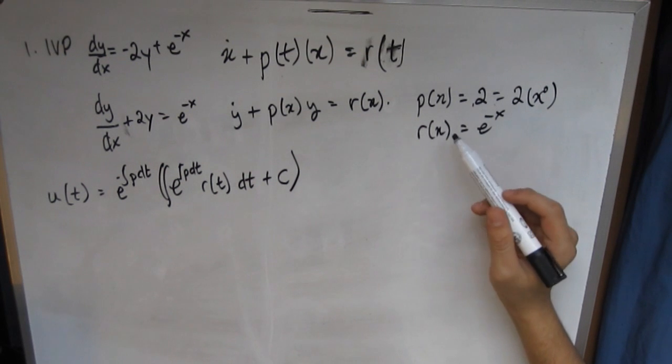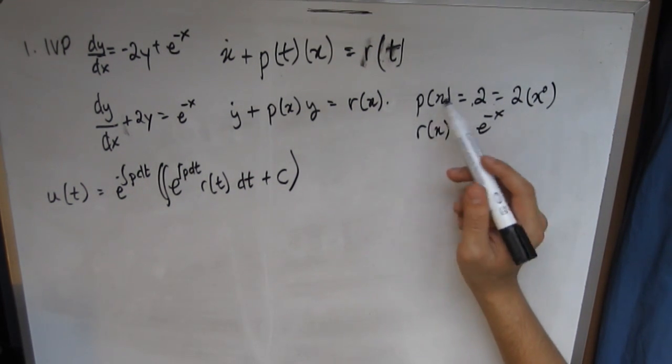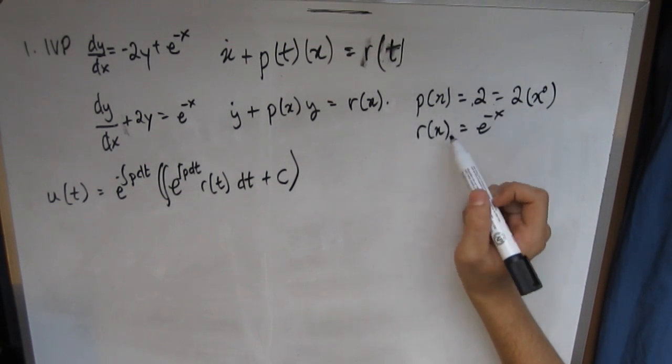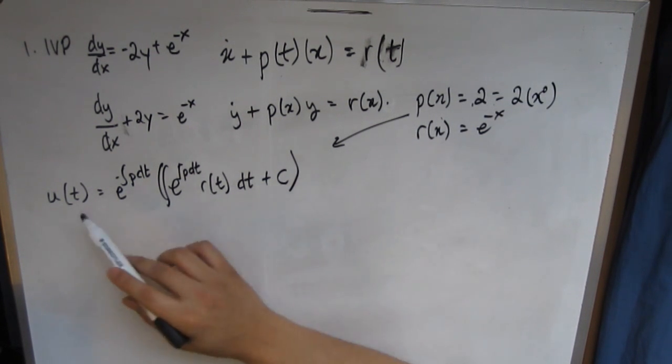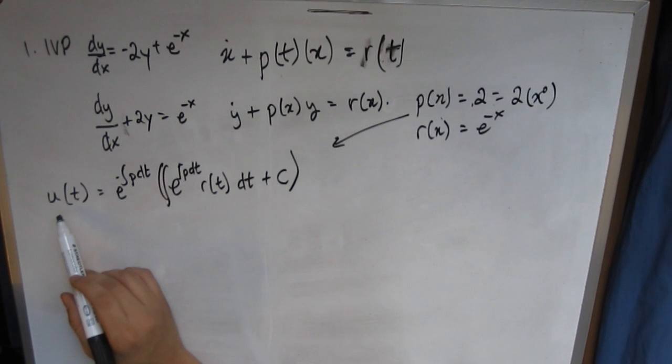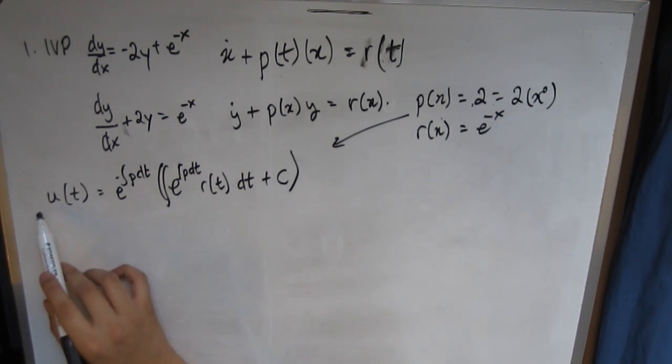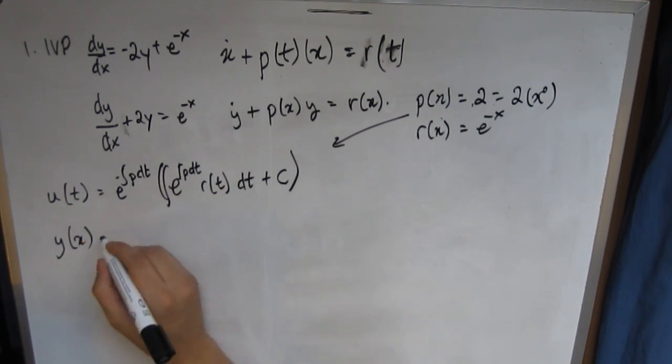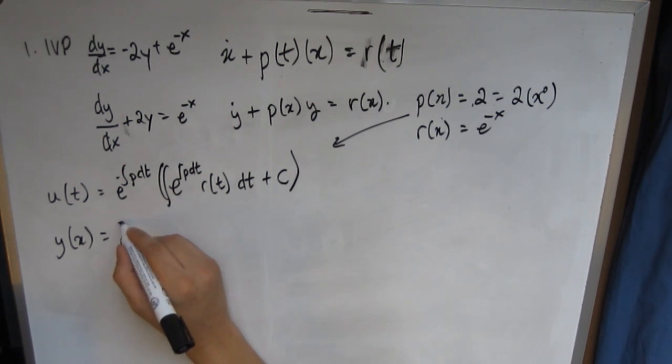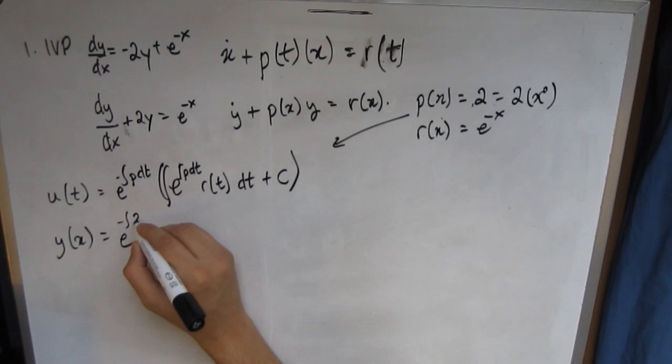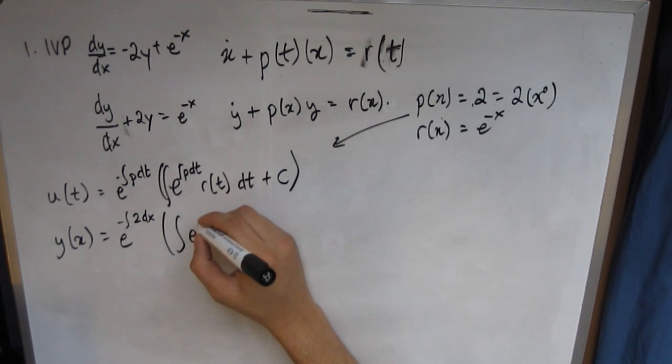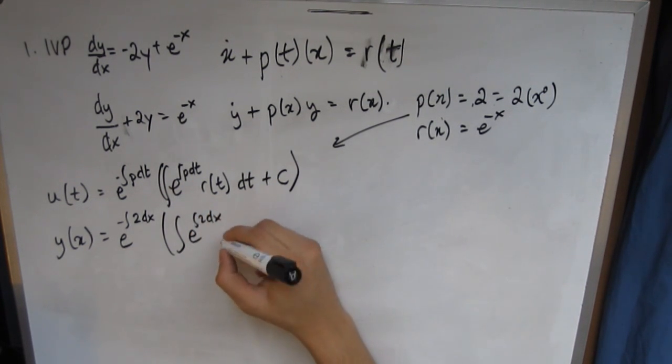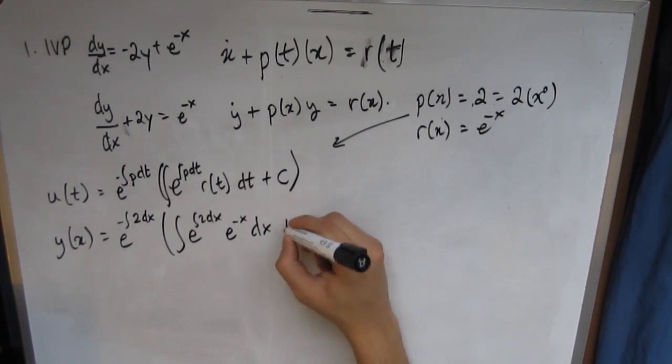Now all we're going to be doing here is subbing in these p(x) and r(x) functions that we basically defined over here and just subbing them in for the p and the r. Obviously our equation is going to be y(x) because that's what we're looking for. So basically the u is being substituted by the y, the t's are being substituted by the x. So we can rewrite this whole equation to suit our initial equation as e^(-∫2 dx) × ∫(e^(∫2 dx) × e^(-x) dx) + c.